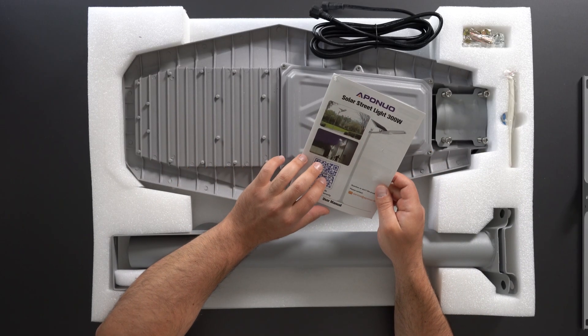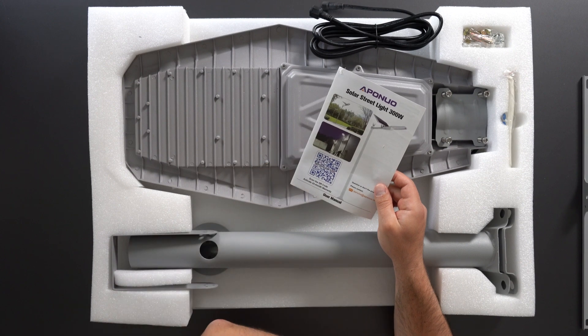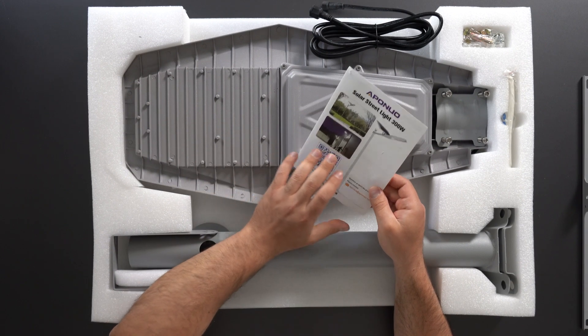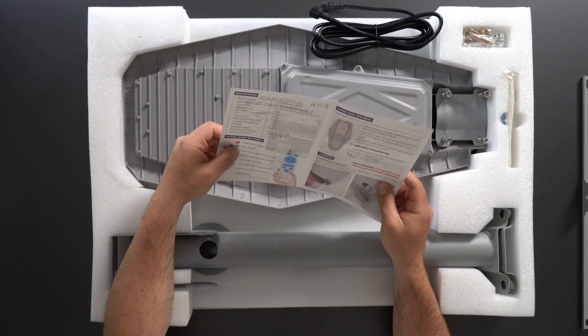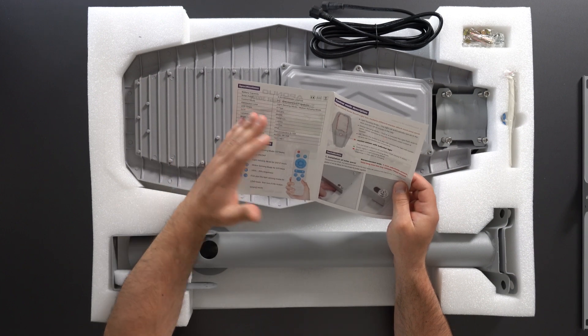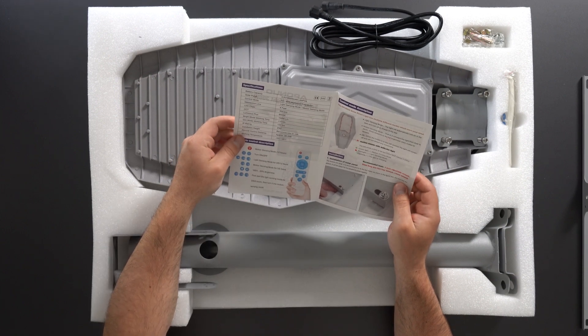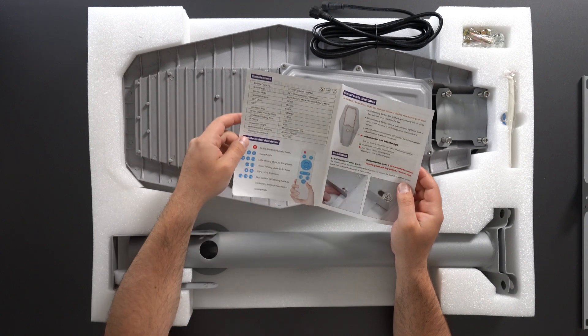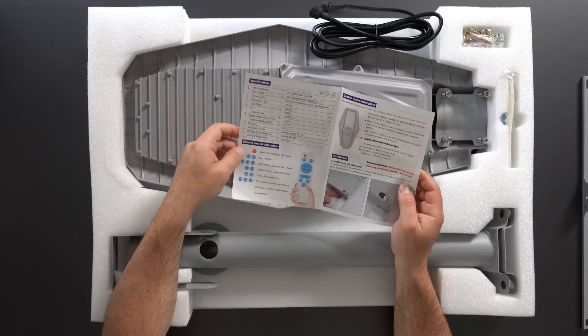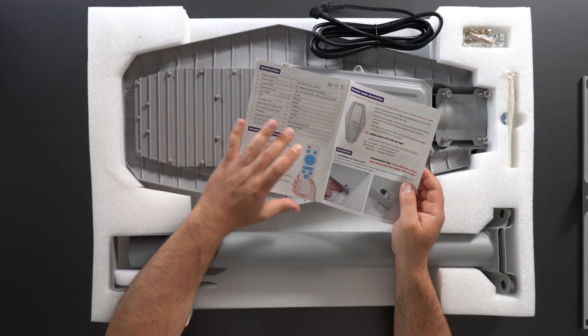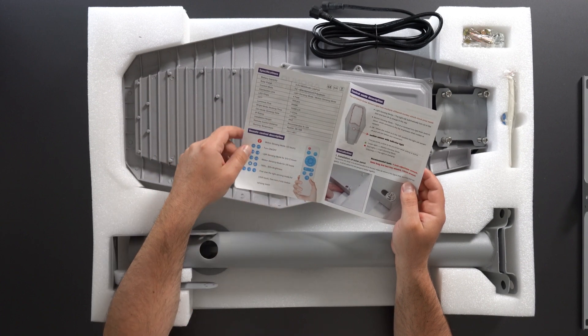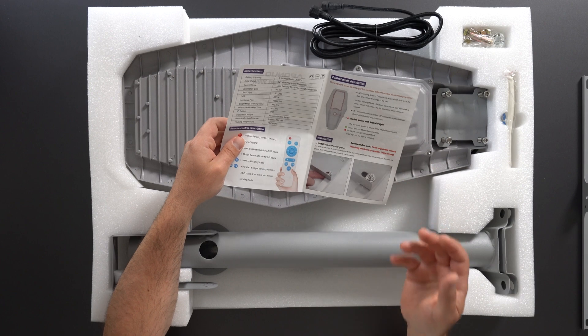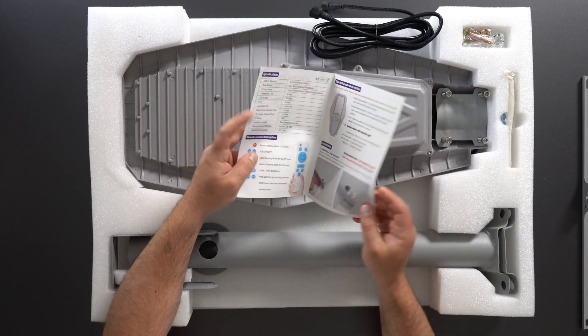The instruction says solar street light 300 watts. However, on the box it says 400 watts. I think this is the 400 watt version because that's the one I selected. So they probably just put the wrong manual in here. All this information is in here, how long it's going to work and stuff. This one says 10,000 lumens, but that might be for the 300 watt version. But it does have the remote control. It tells you all the options and how to install it as well.